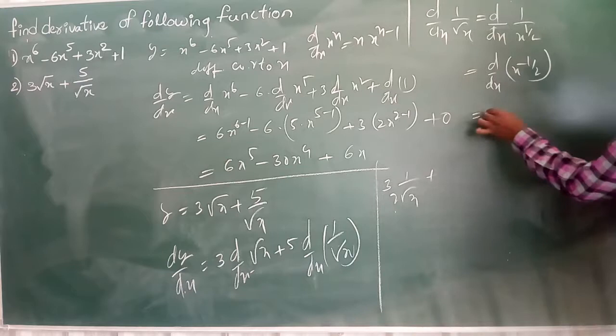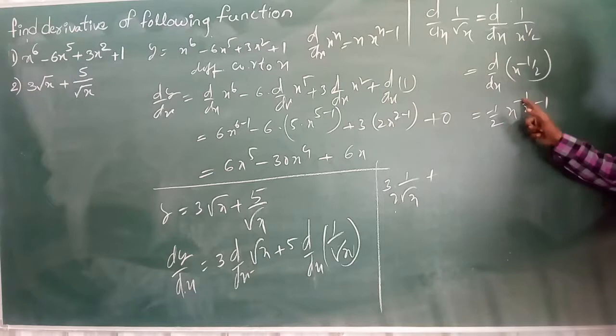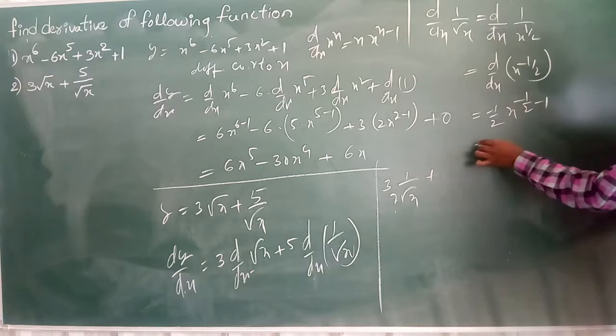Now we write it down. Minus 1 by 2 x power minus 1 by 2 minus 1. n into x power n minus 1. My n value is how much? Minus 1 by 2.